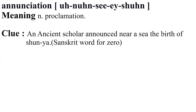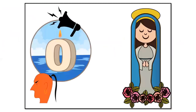Enunciation — it means proclamation. Clue: an ancient scholar announced near a sea the birth of Shunya, the Sanskrit word for zero. Visualize an ancient scholar announcing near a sea the birth of zero.